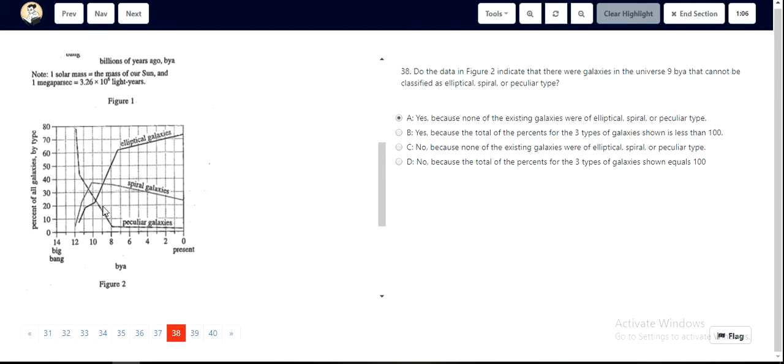So we eliminate option C and D. Now let's look at A and B. A states that yes, there was another galaxy, and the galaxies cannot be classified as elliptical, spiral, or a particular type, because none of the existing galaxies were of this particular type.